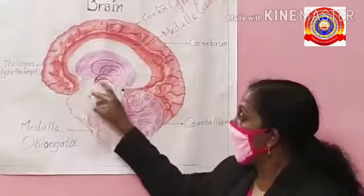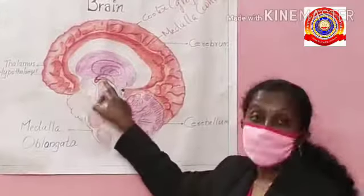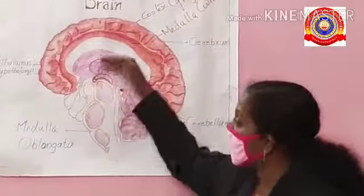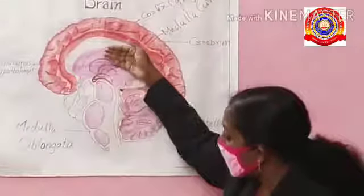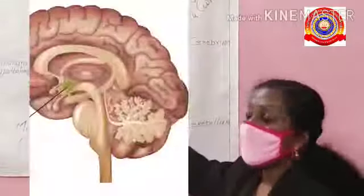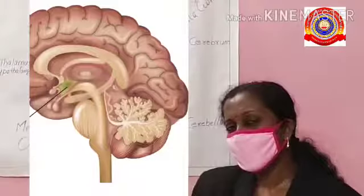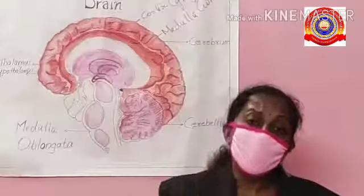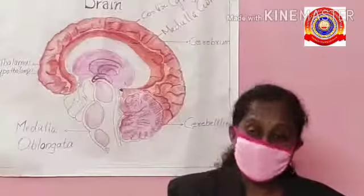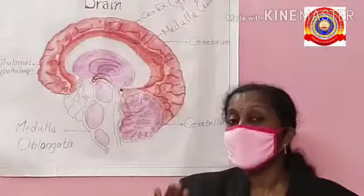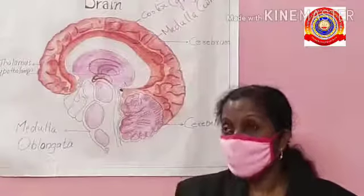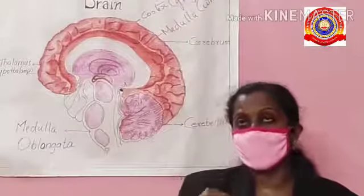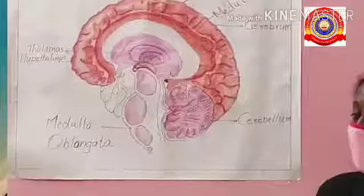The hypothalamus is seen just below the thalamus. Its function is to maintain homeostasis — it controls all body activities such as hunger and thirst.